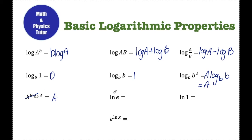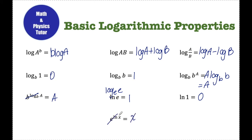Ln of e — remember, ln is really log with base e. So if I have again the same base that I'm taking the log of, they pretty much just cancel out and I end up with one. Ln of one is zero. And then e to the ln x — this is one where the base and the base of the log match, so essentially those cancel out and you're left with that exponent x.